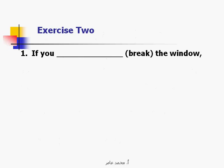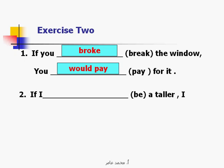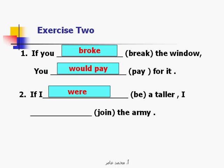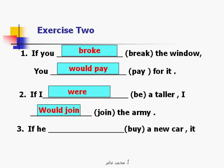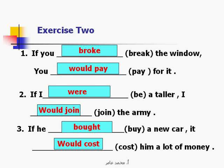Exercise 2: 'If you break the window, you pay for it.' — If I were taller, I would join the army. If he bought a new car, it would cost him a lot of money.